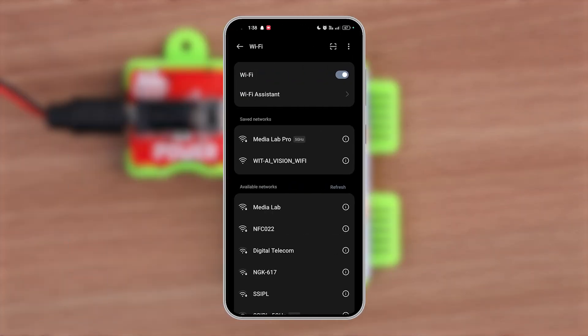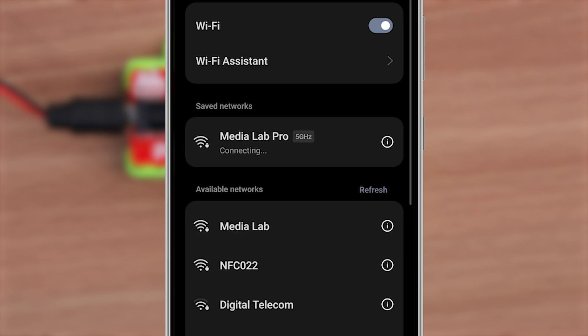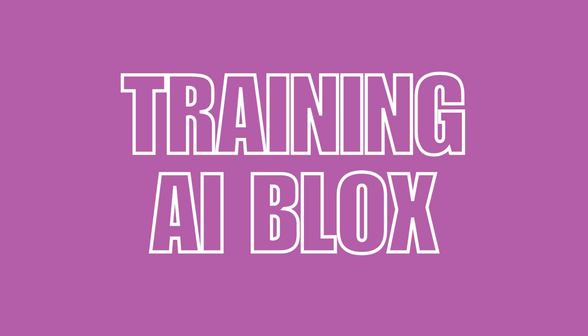Now connect your phone back to the internet using mobile data or Wi-Fi, not the AI vision one. Now comes the AI model training part.